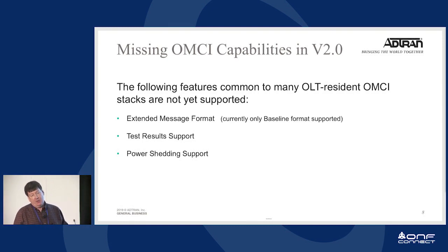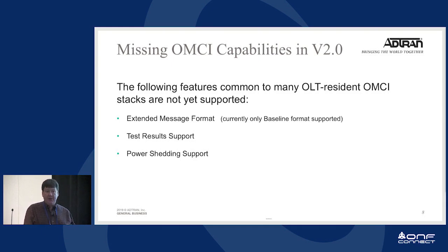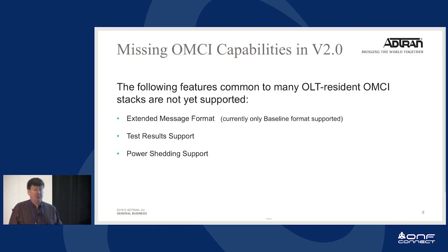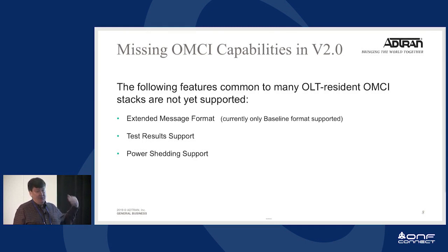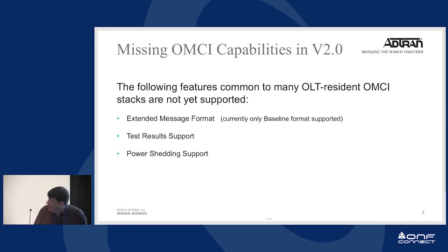That is for version 2.0 of VOLTHA. OpenOMCI first came out in version 1.3 on the ADTRAN adapter, and that just included the frame classes, the communication channel, and the task runner. That was basically to get some of those mechanisms working and get past problems with the old scripted approach of doing OMCI. The 2.0 effort represents the full framework described here.